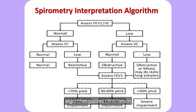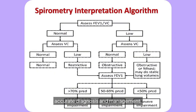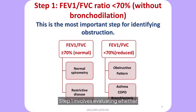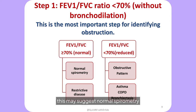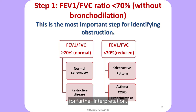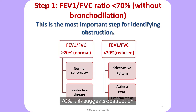The spirometry interpretation algorithm guides clinicians in diagnosing respiratory conditions through a systematic approach. Step one involves evaluating whether the FEV1/FVC ratio is below 70% or within the normal range, as this is the critical starting point. If the ratio is normal, this may suggest normal spirometry or restrictive disease — continue with steps two to four. If the FEV1/FVC ratio is below 70%, this suggests obstruction — follow steps five to eight.